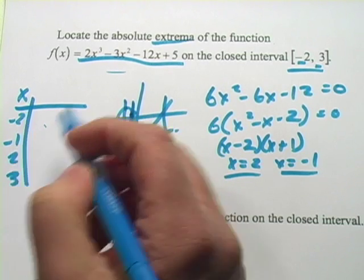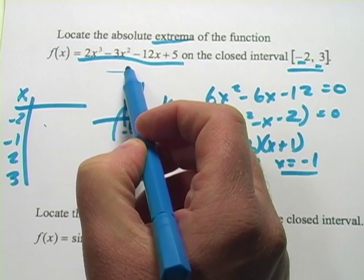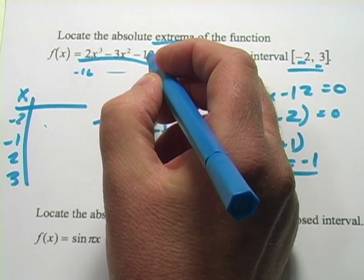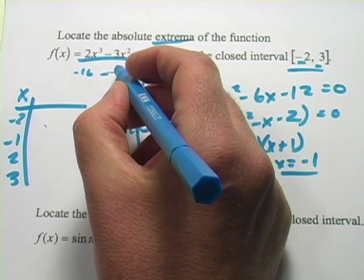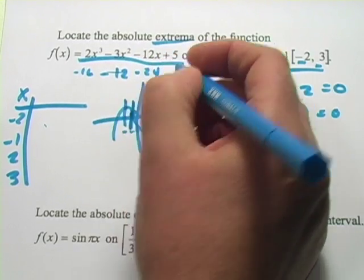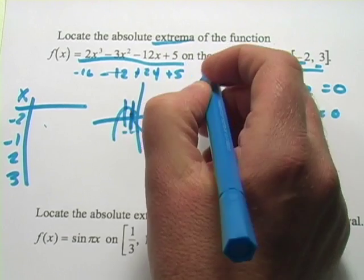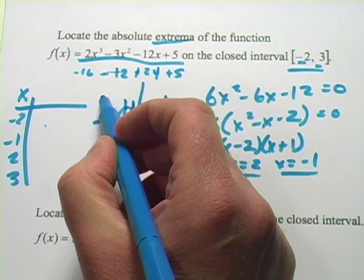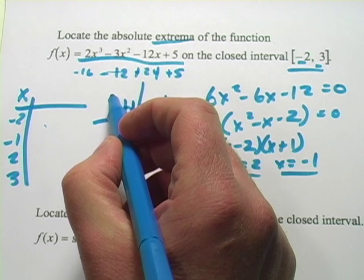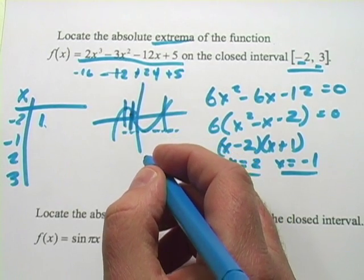So negative two, that would be negative eight and 16, negative 16. So we'd have -16 - 12, minus 24, oops, plus 24, plus 5. So that would be, it looks like that crunches out to 1. I think so. So I've got negative two having the value one.